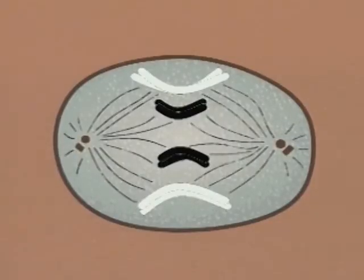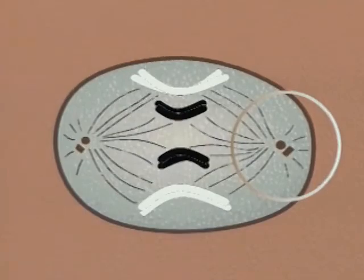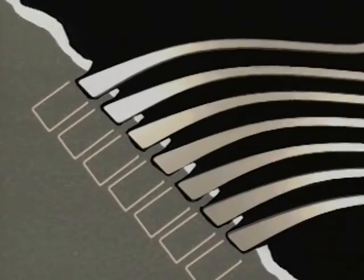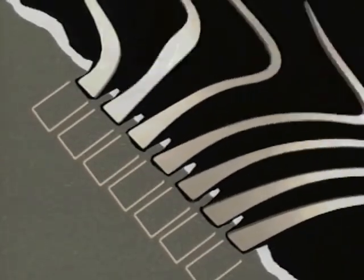We do know, however, that cilia and flagellae have close similarities with the mitotic spindle fibers which appear during cell division. And the basal bodies of the cilium or flagellum are similar to the centriole from which the spindle fibers form.